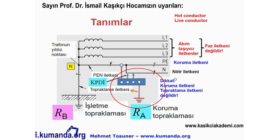Sayın Prof. Dr. İsmail Kaşıkçı hocamızın uyarılarına dikkat etmeye çalışacağım. Bizim faz iletkeni dediğimiz L1, L2, L3 iletkenleri aslında akım taşıyıcı iletkenlerdir; bazı kaynaklarda canlı iletken olarak isimlendirilir. Buradaki koruma iletkeni PE'yi topraklama iletkeni olarak söylememek lazım; bu koruma iletkenidir. Topraklama iletkeni ise trafomuzun yıldız noktasının toprağa bağlantısının yapıldığı kablodur.